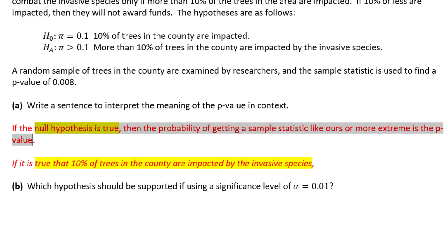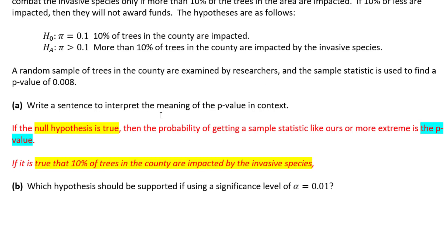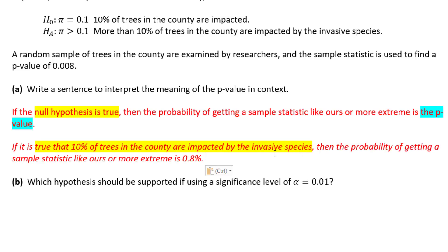Next, we want to put the actual p-value in for this particular problem because we know the p-value. The last part of the statement — "then the probability of getting a sample statistic like ours or more extreme is the p-value" — will be replaced with: "then the probability of getting a sample statistic like ours or more extreme is 0.8%." I get 0.8% because the p-value was 0.008, which as a percentage is 0.8%. So it's a less than 1% chance of seeing a statistic like this or more extreme if it's true that 10% of the trees in the county have this invasive species.